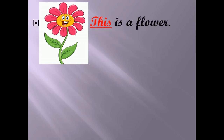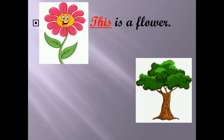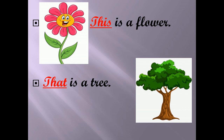Flower is near, that's why we write 'this' — 'This is a flower.' Next picture — it is a tree, and the tree is far. So we will write 'that' — 'That is a tree.'